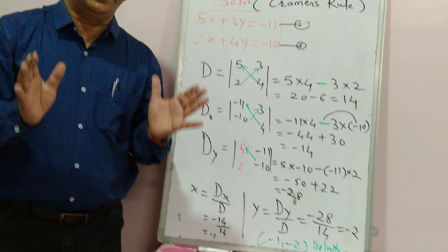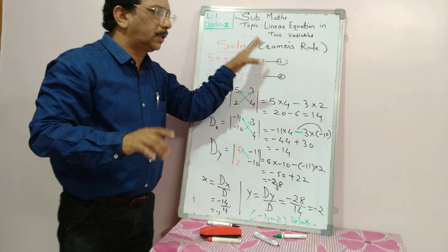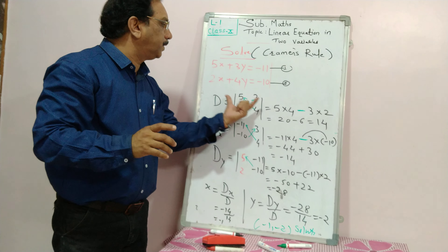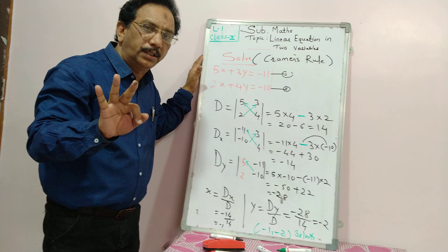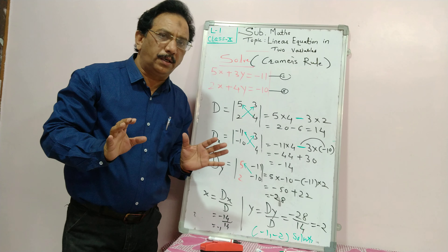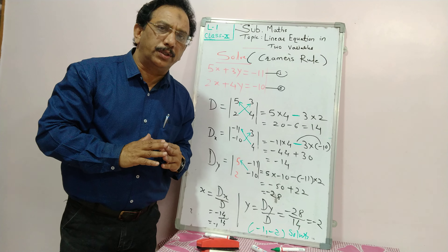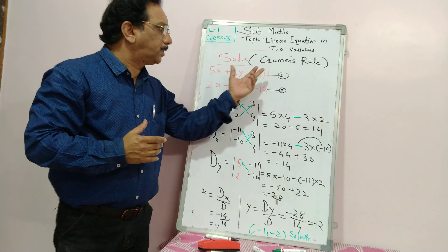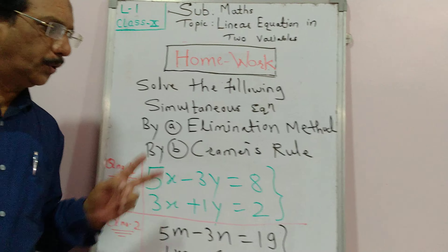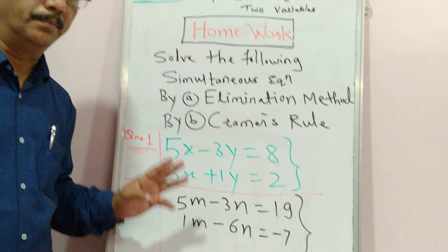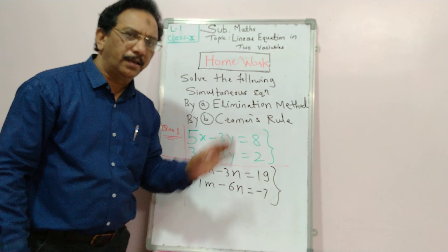So today we solved the same questions by two methods: the elimination method and Cramer's rule. In an examination, Cramer's rule is definitely asked. If asked to find only the value of a determinant, it is worth one mark; if the whole question is asked, it is three marks. Please note it down. I am now giving you two questions as homework — solve both by the elimination method as well as by Cramer's rule. Note down the two questions and solve them by both methods. Thank you.